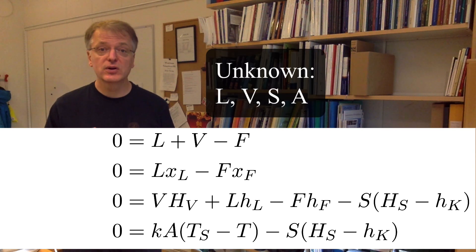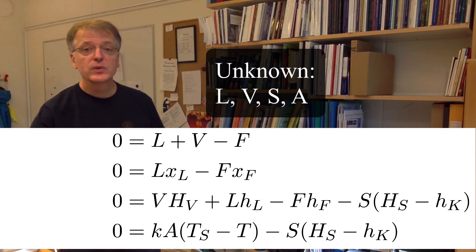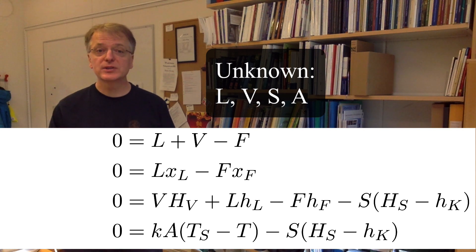In our case the unknowns are liquid flow L out, vapor flow V out, steam flow S and area A. We thus have four unknowns and we also have four equations. So this looks solvable.